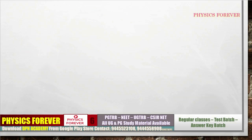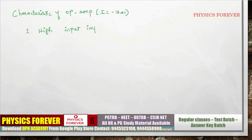Next, what are the characteristics of the op-amp IC741? The first characteristic is high input impedance. We need to know that the op-amp draws minimum current from the input signal source, which is why high input impedance is essential.